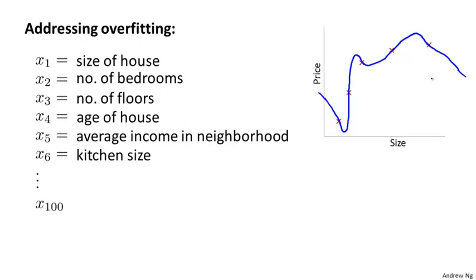So concretely, if we're trying to predict housing prices, sometimes we can just have a lot of different features, and all of these features seem kind of useful. But if we have a lot of features and very little training data, then overfitting can become a problem.